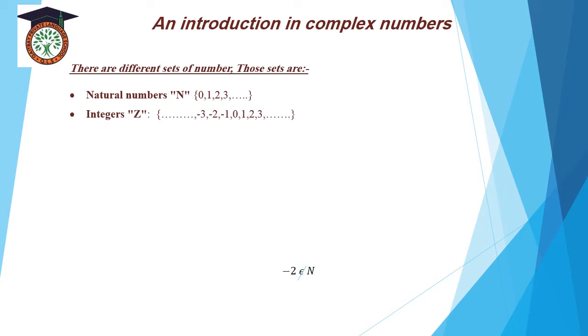Integers Z: 0 in the middle, and 1, 2, 3, and so on, and the negative numbers: negative 1, negative 2, negative 3, and so on.